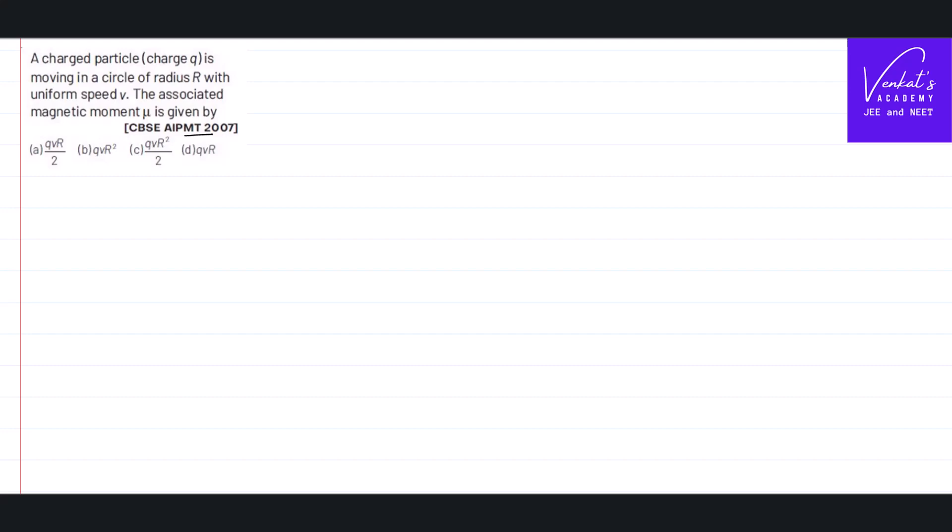This is an AAPMT question in moving in Magnetism and Matter. See the question. A charged particle of charge q is moving in a circle of radius r with a uniform speed v. What is the associated magnetic moment of that?